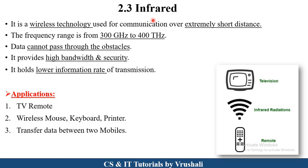The next type is infrared. Infrared is a wireless technology used for communication over extremely short distances or within one room. For example, a TV remote — through the remote you can access the TV, but if there is an obstacle in between, the remote cannot work. Infrared provides high bandwidth and security but holds a lower information rate. The frequency range is 300 gigahertz to 400 terahertz. Applications include TV remotes, wireless mouse, keyboards, printers, and data transfer between two mobile devices using hotspot or Wi-Fi.